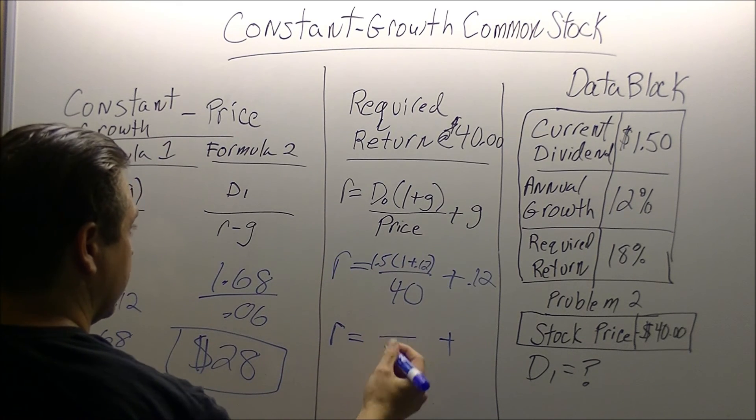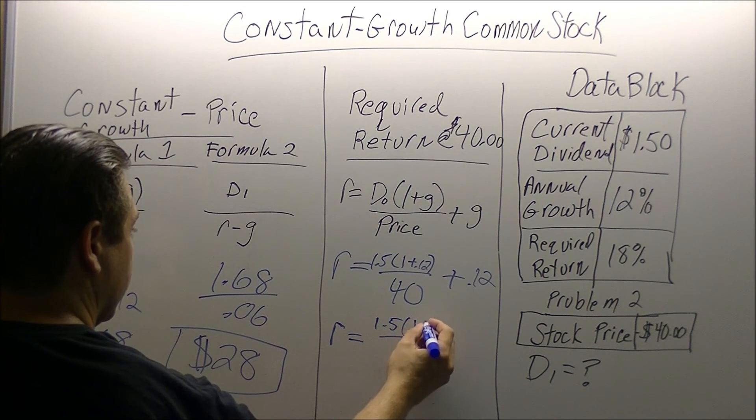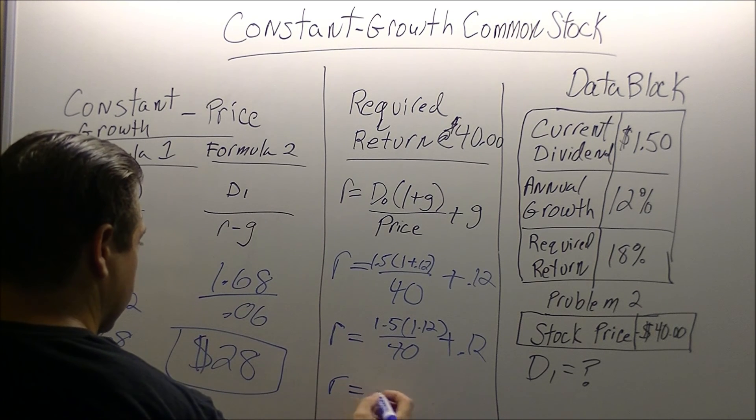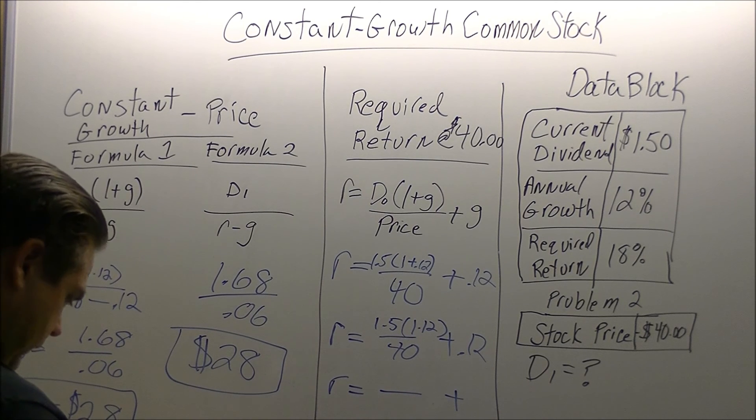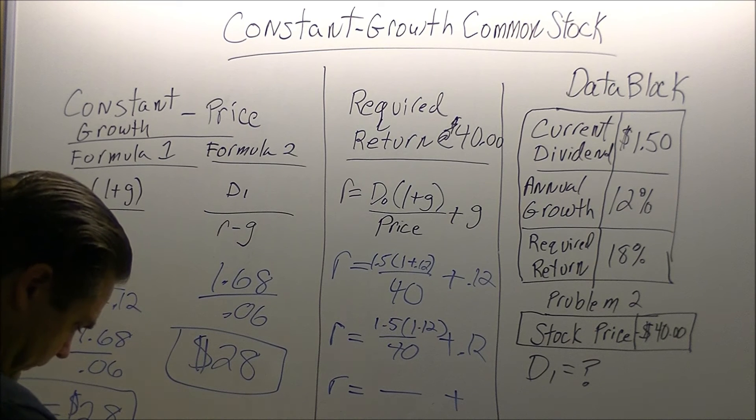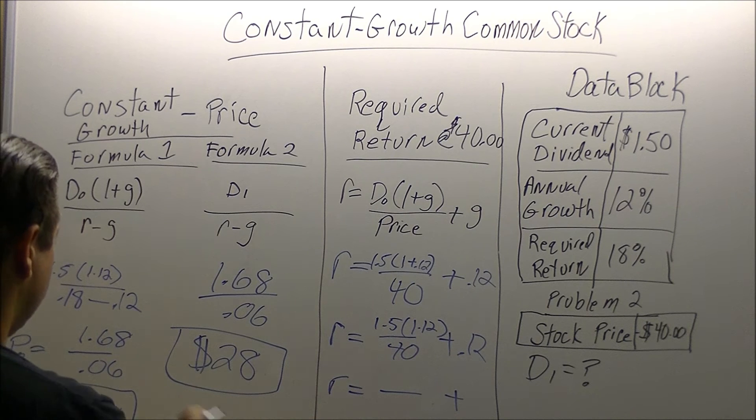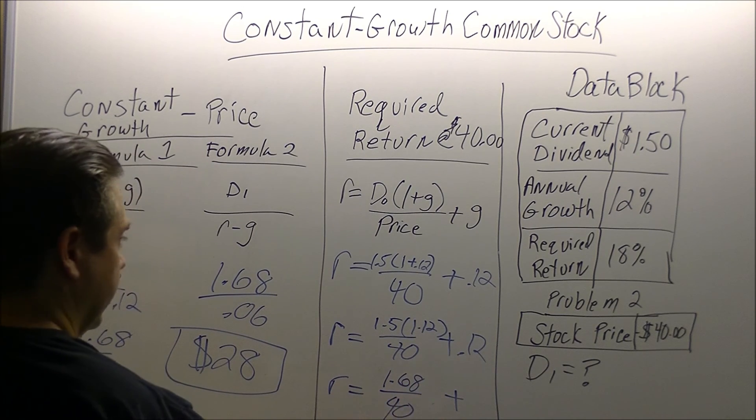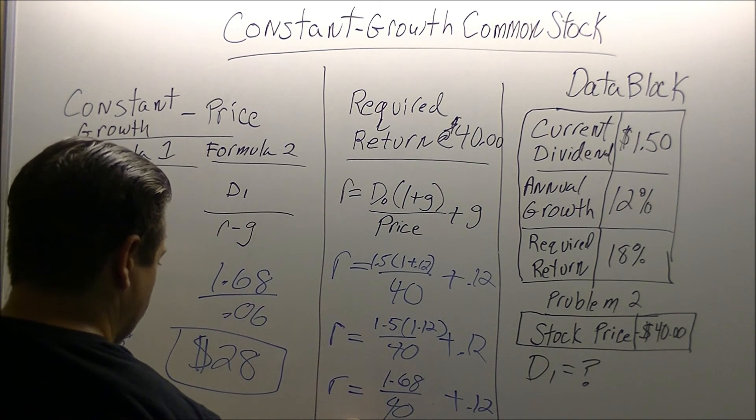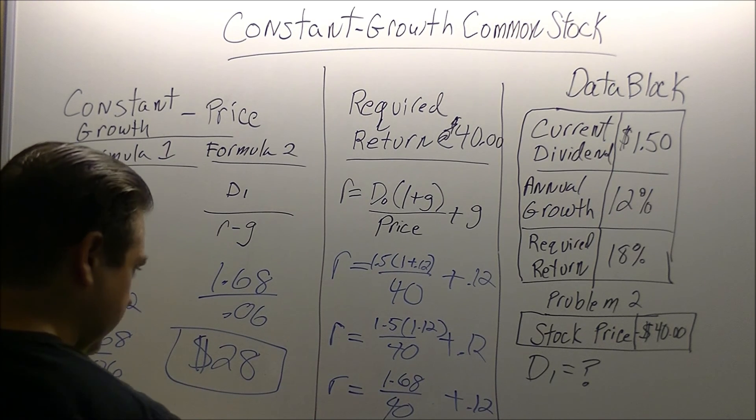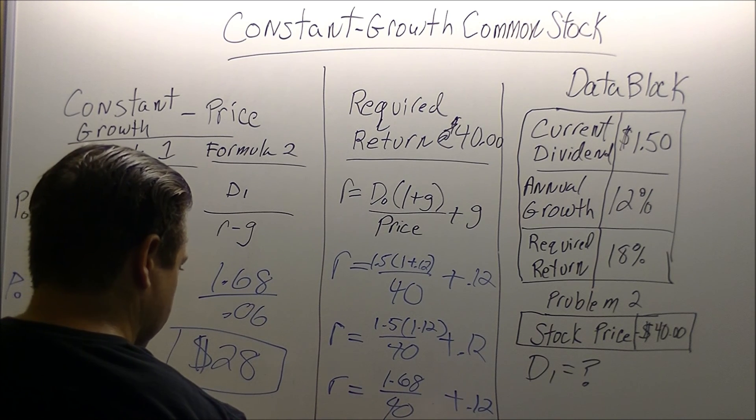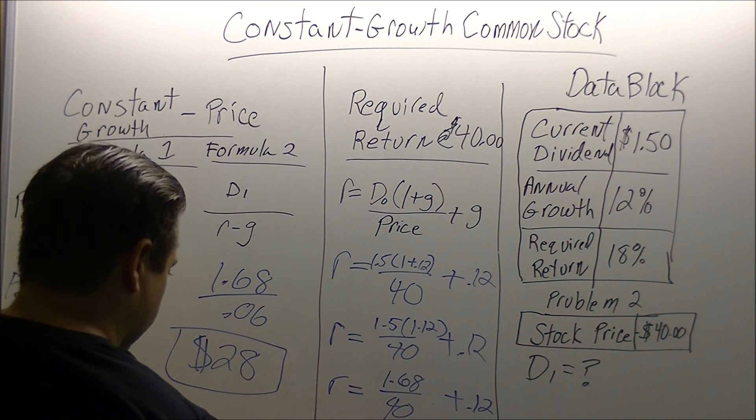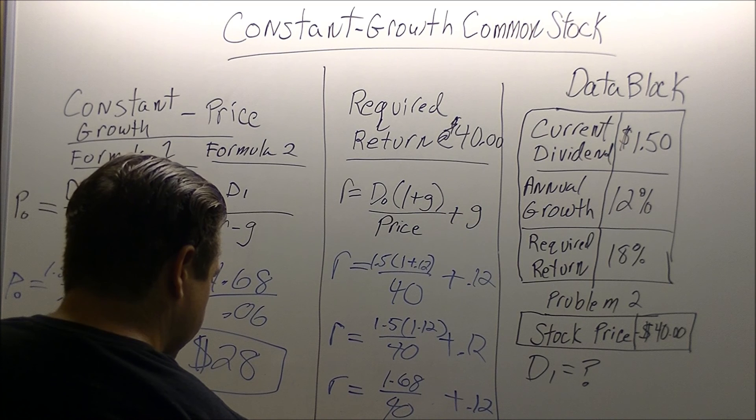Next thing we're going to do is start using our orders of operations. 1.5 times 1.12 equals 1.68. We're going to divide that by our 40 and keep our 0.12 outside. 1.68 divided by 40 is going to give us 0.042. We're going to add 0.12, and our final rate is going to be 0.162 or as a percent 16.2%.